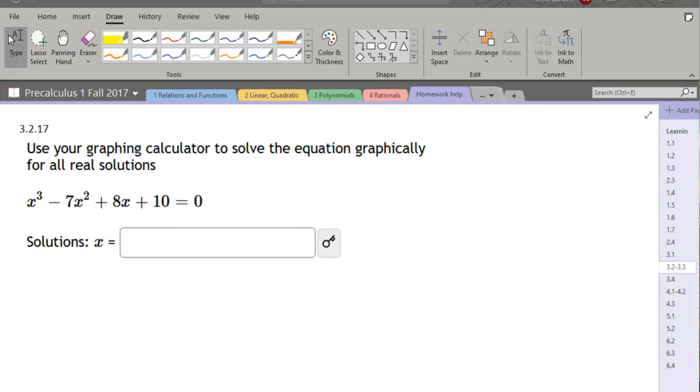We're about to find the real zeros of a polynomial using a graphing utility. Now you could use a graphing calculator, I'm going to use Desmos because it's a website and you can just go there and you don't need to purchase anything.